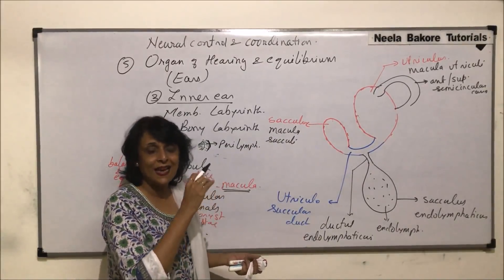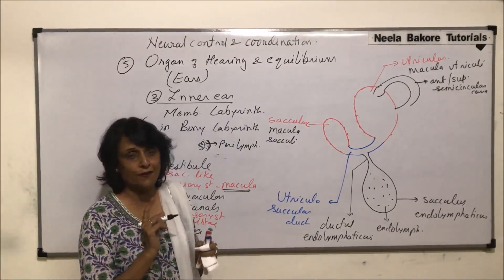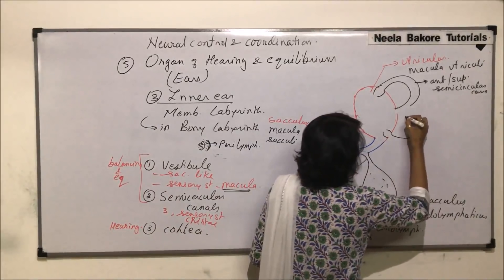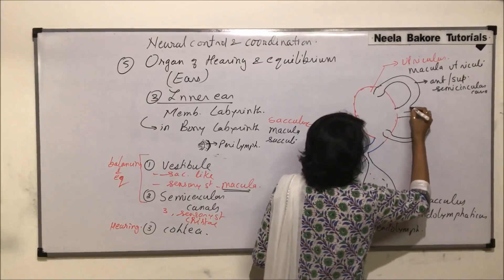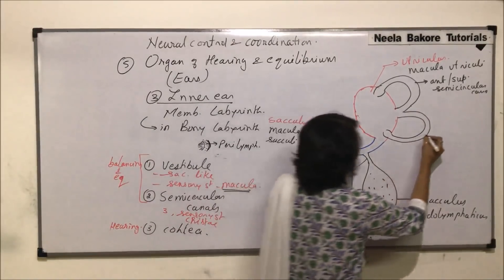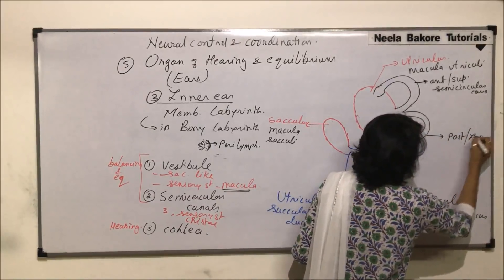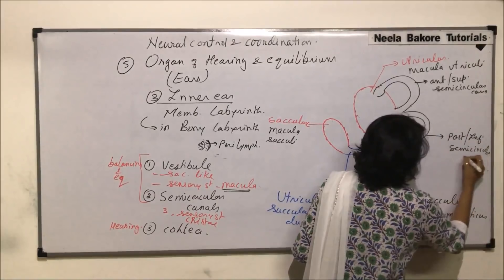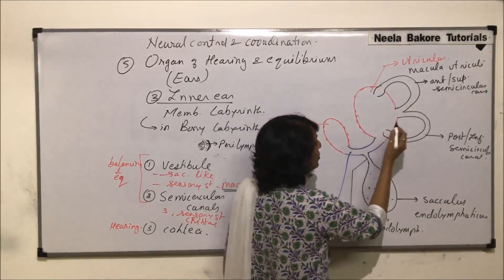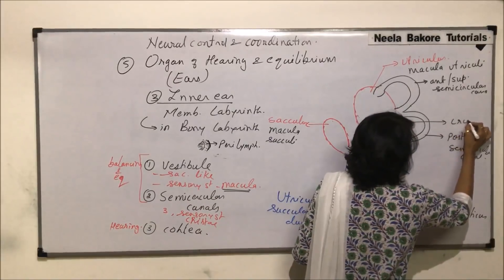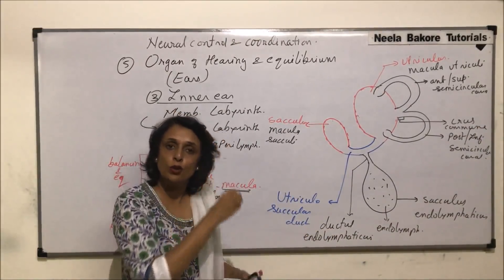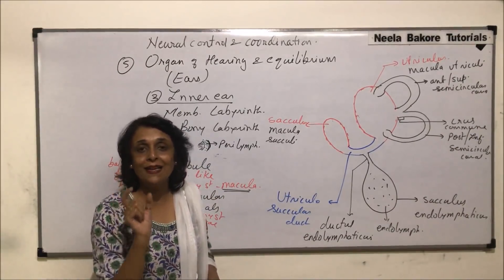Now the second canal: the posterior or inferior one. The posterior canal has its ampulla here, and it actually opens along with the anterior canal — they have a common opening into the utriculus. This common narrow opening of both the anterior and posterior canals into the utriculus is known as cruss commune. So superior and inferior canals each open into the utriculus, one end having the ampulla with the sensory crista inside.